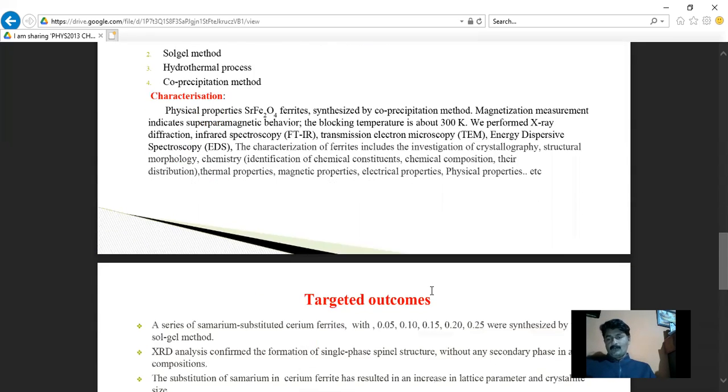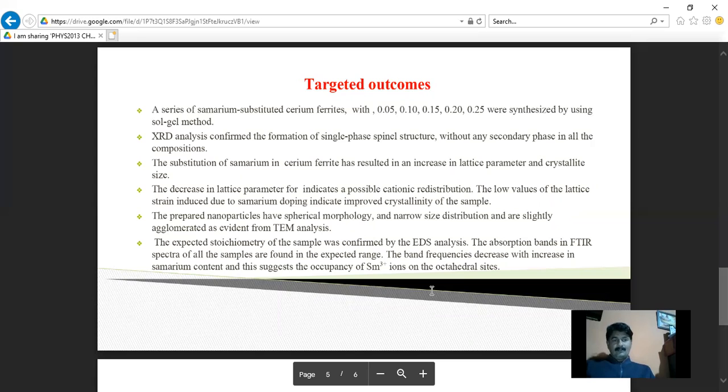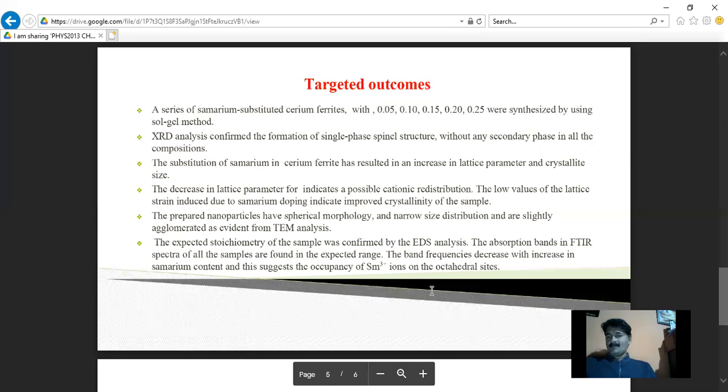And last, the targeted outcome: a series of samarium or strontium substituted cerium ferrites with compositions 0.05, 0.10 and so on were synthesized by using sol-gel method, that is autocombustion. And thereafter for the characterization, XRD analysis confirmed the formation of single phase spinel structure without any secondary phase in all composites. The substitution of samarium in cerium ferrite has resulted in an increase in lattice parameter and crystalline size.